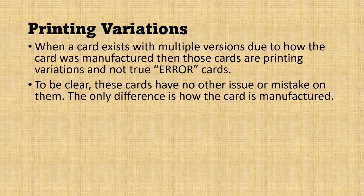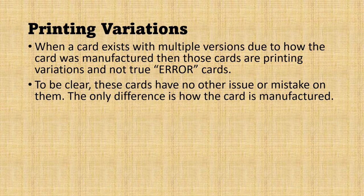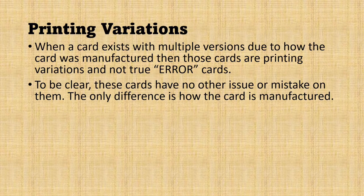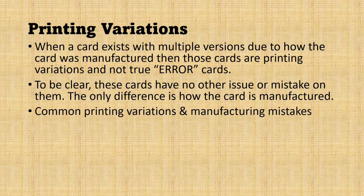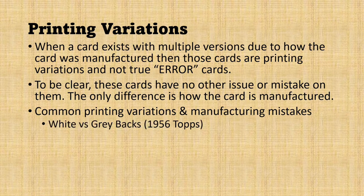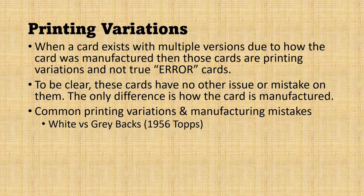To be clear, these cards have no issue or mistake on them. The only difference is how the card is manufactured. Think about cards that have multiple colors, or backs, or different things — but there was no error intended to be fixed. For those cards, just somehow through the printing process something happened where there were multiple versions of the card. Some common printing variations are the white versus gray backs in '56 Topps.